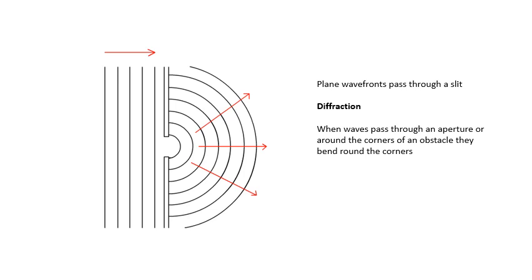So the plane wave fronts go through an aperture. An aperture could be like a slit or a circular hole, basically a gap. And the waves bend around the corners. And this is called diffraction.